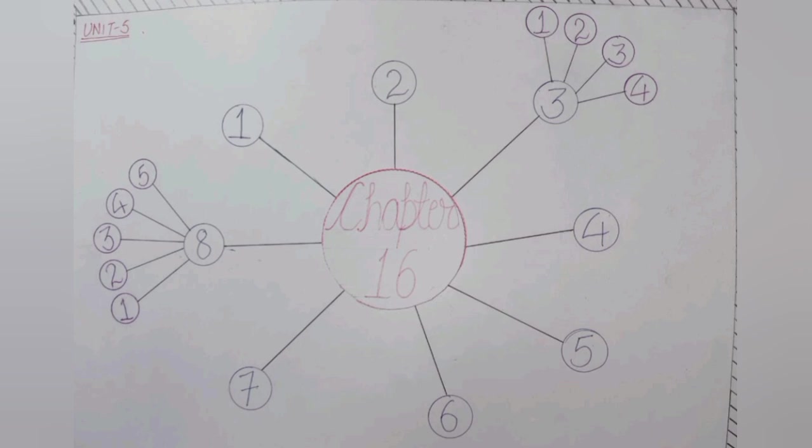Antennal glands or green glands are excretory structures in crustaceans like prawns. Coxal glands are excretory structures in arachnids like spiders and scorpions within arthropods.